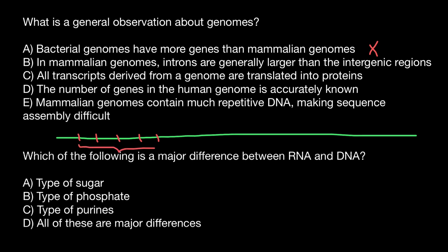This fragment represents a gene, and here we have another gene, also with introns shown in green and exons in red. This is the intergenic space — it doesn't code for any proteins, just like introns within a gene. Checking the statement again: introns are generally larger than the intergenic regions — this is wrong. Compare this distance of introns with the distance of the intergenic space.